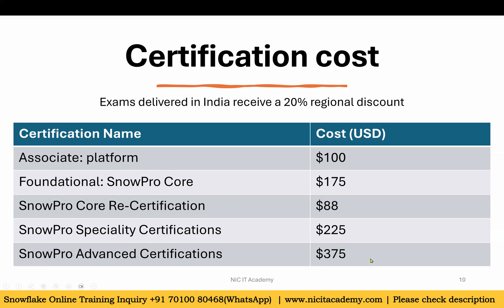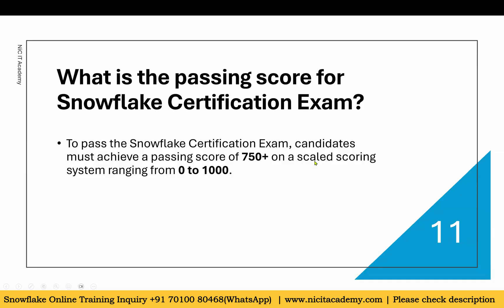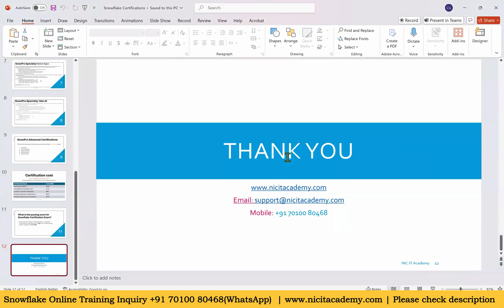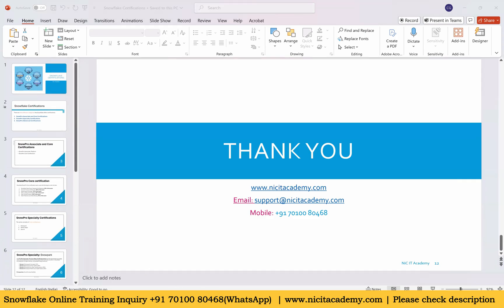The scoring is on a scale of 0 to 1000, and you need to score 750 or above to pass. That means 75% is the passing score - you must score at least 750 to clear the certification.